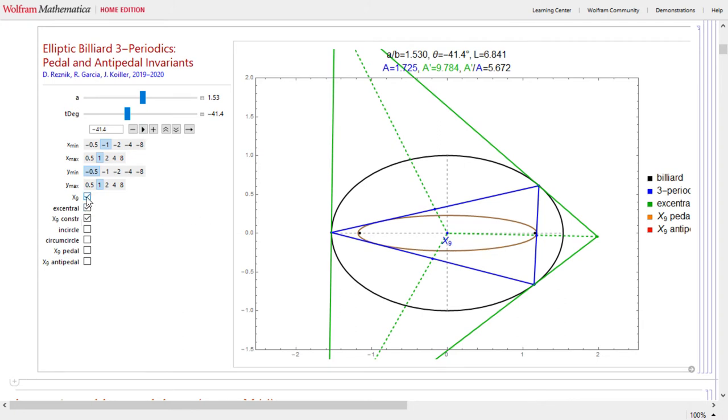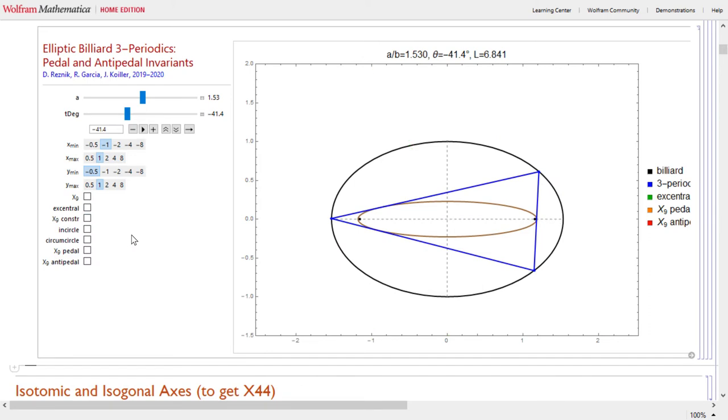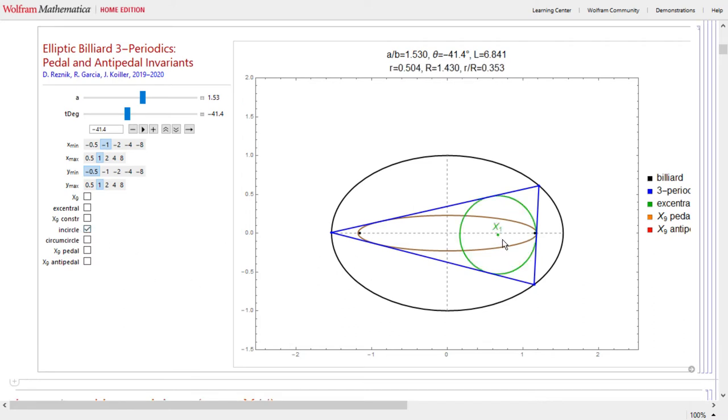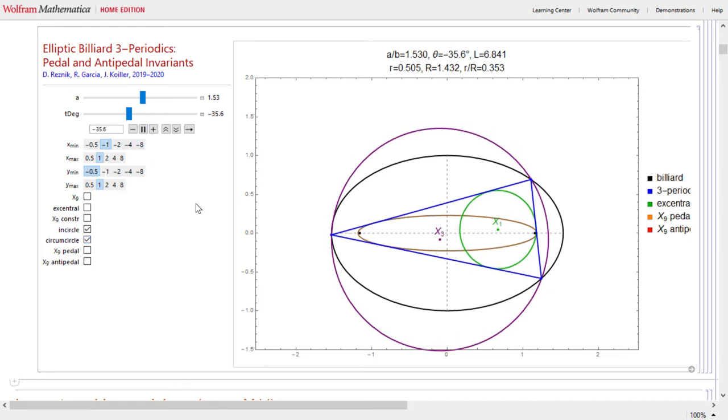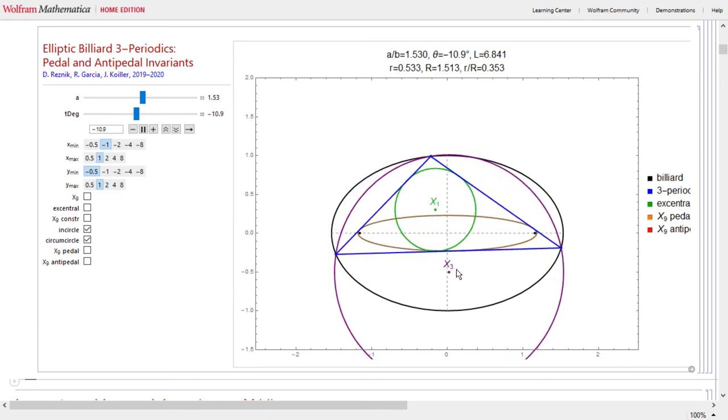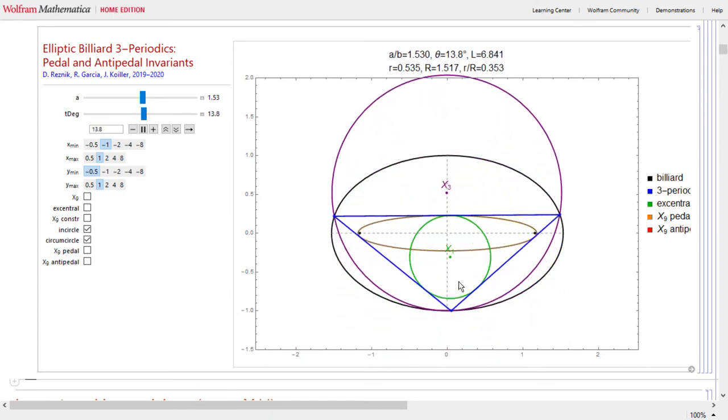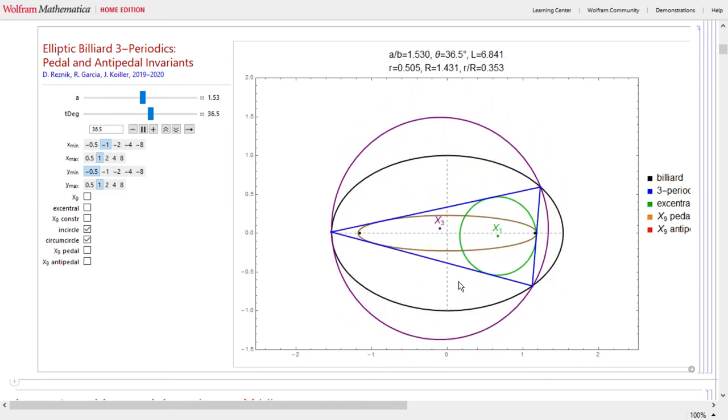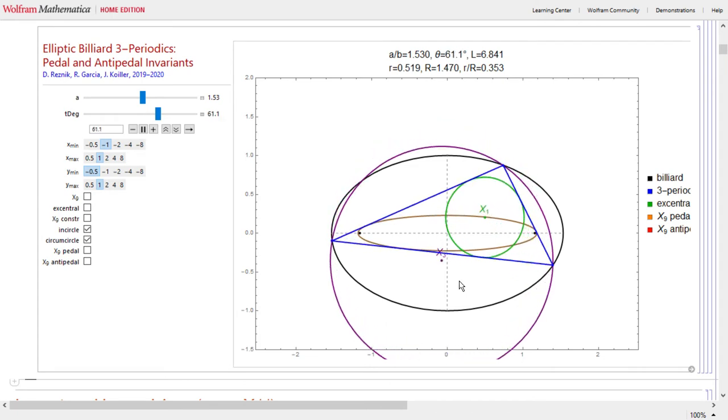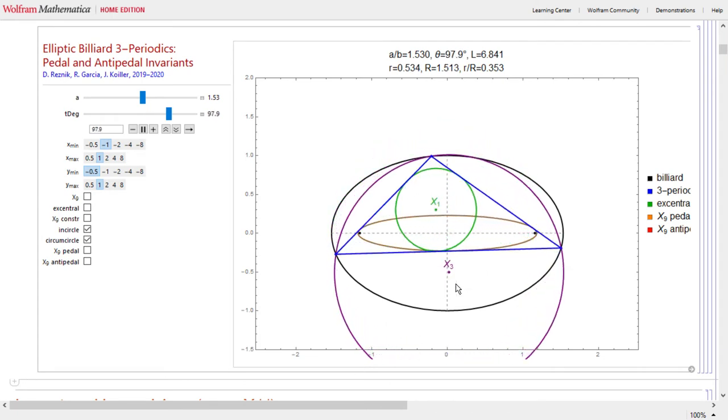Let's go ahead and get rid of the central and meeting point and everything else. I want to show you guys a second really neat property of this family. If I draw the incircle centered on the incenter and the circumcircle centered on circumcenter, as I animate the family these points X1 and X3 will be describing elliptic loci.